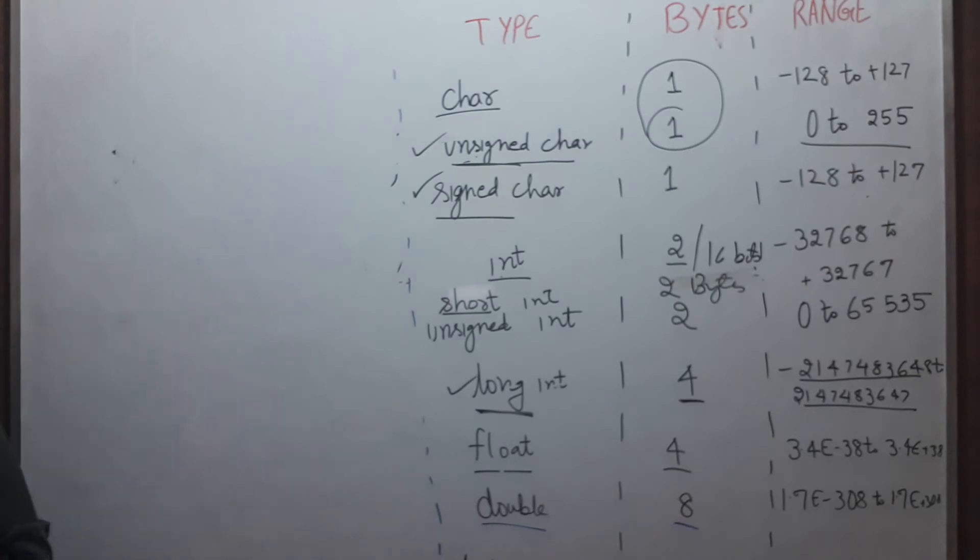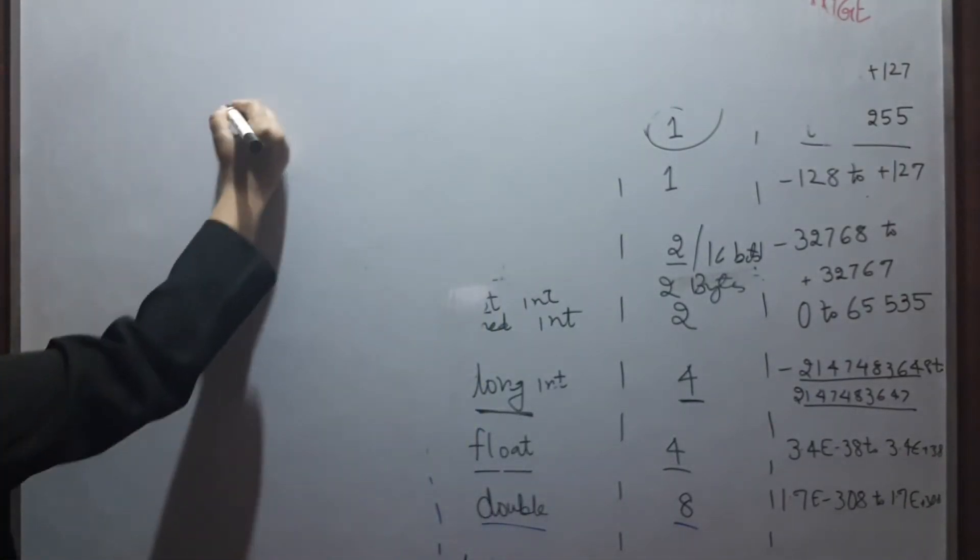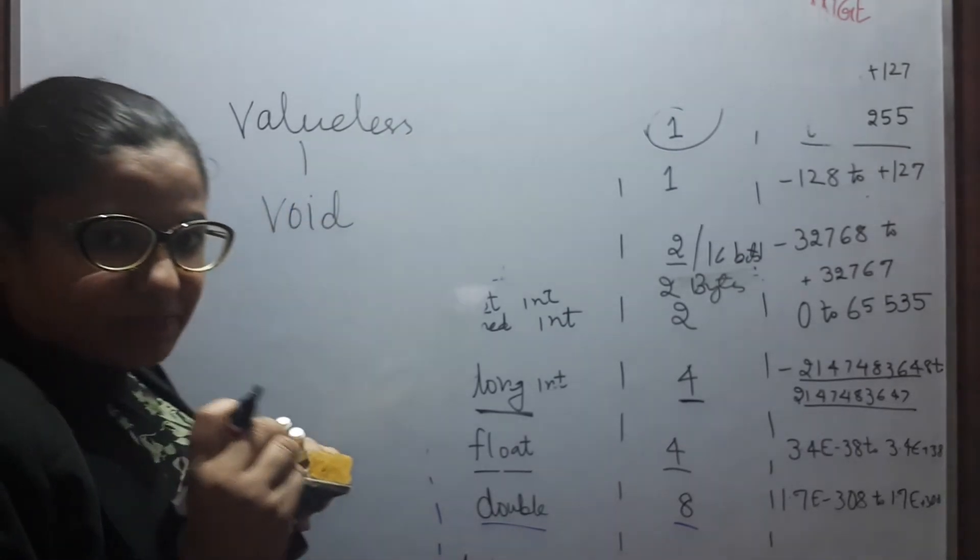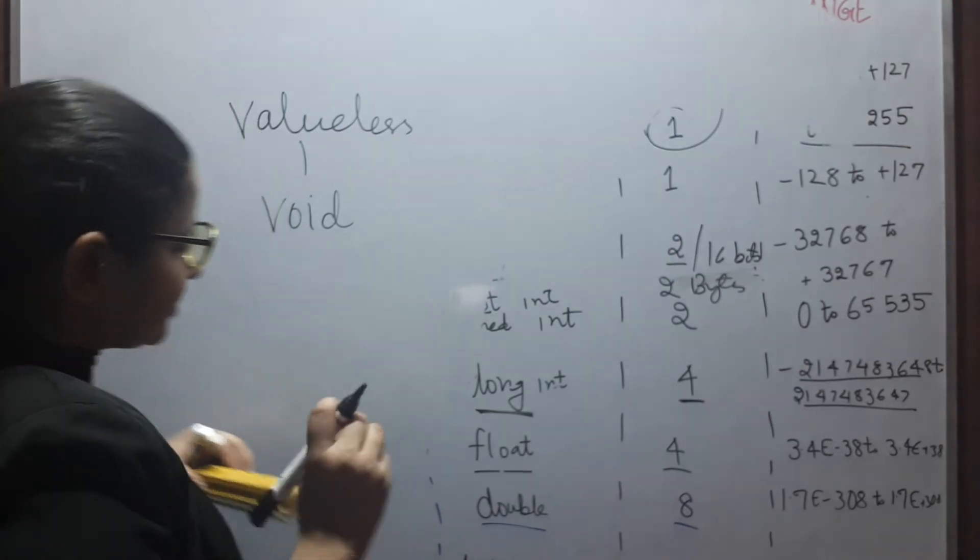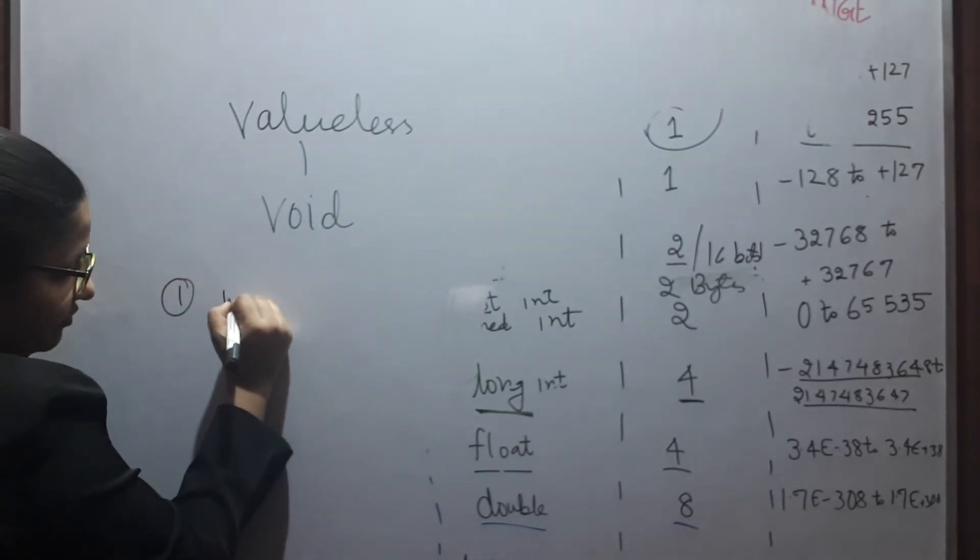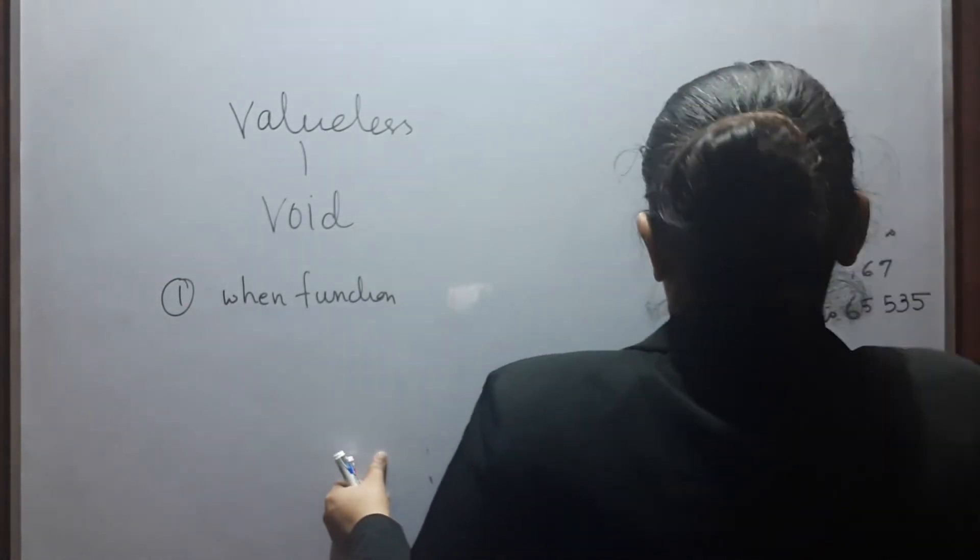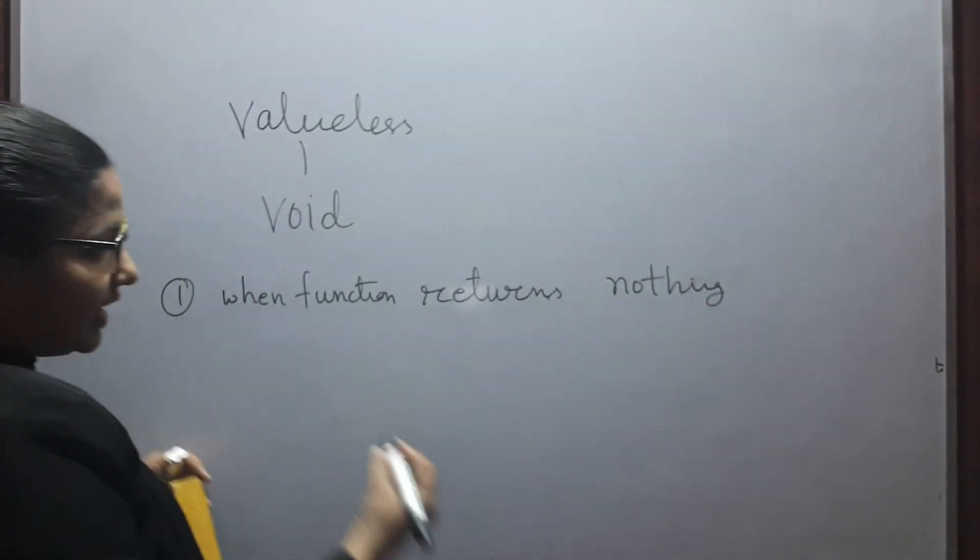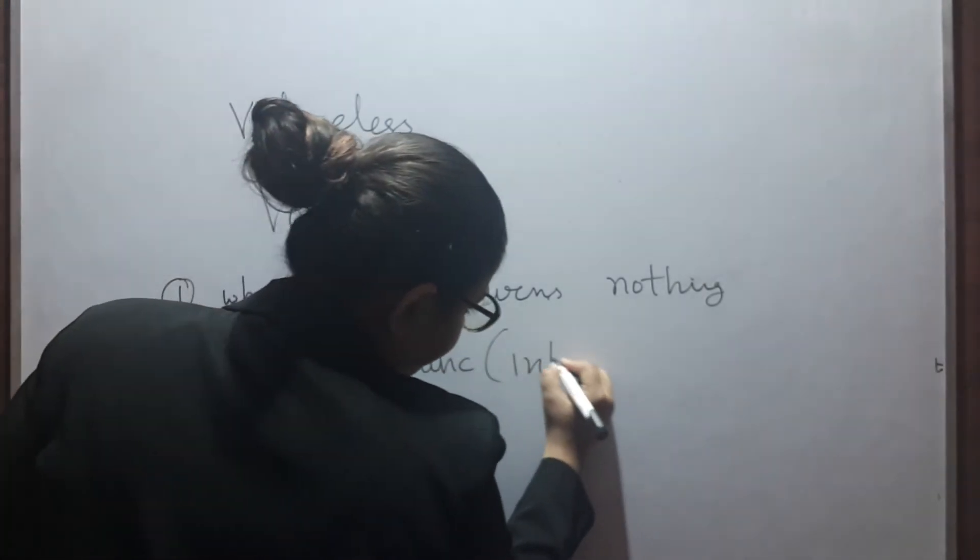Next, we have third basic data type that is valueless. Valueless means void. Void data type is basically used at three different situations. The first situation is when function is returning nothing. When function is returning nothing, returns nothing. So what do you write? You write void funk and input arguments.